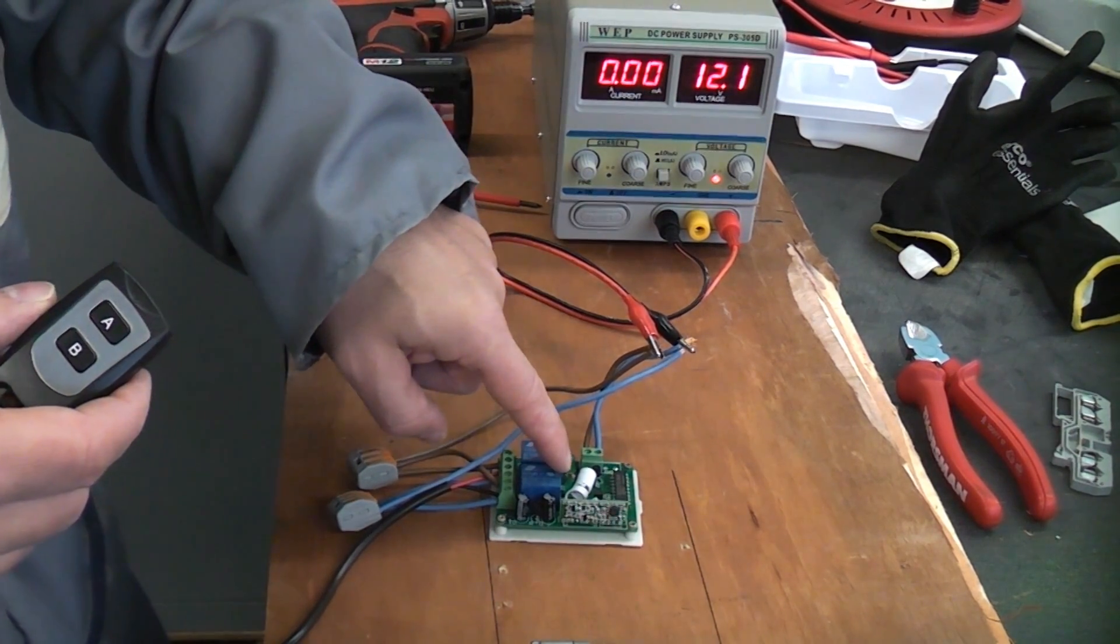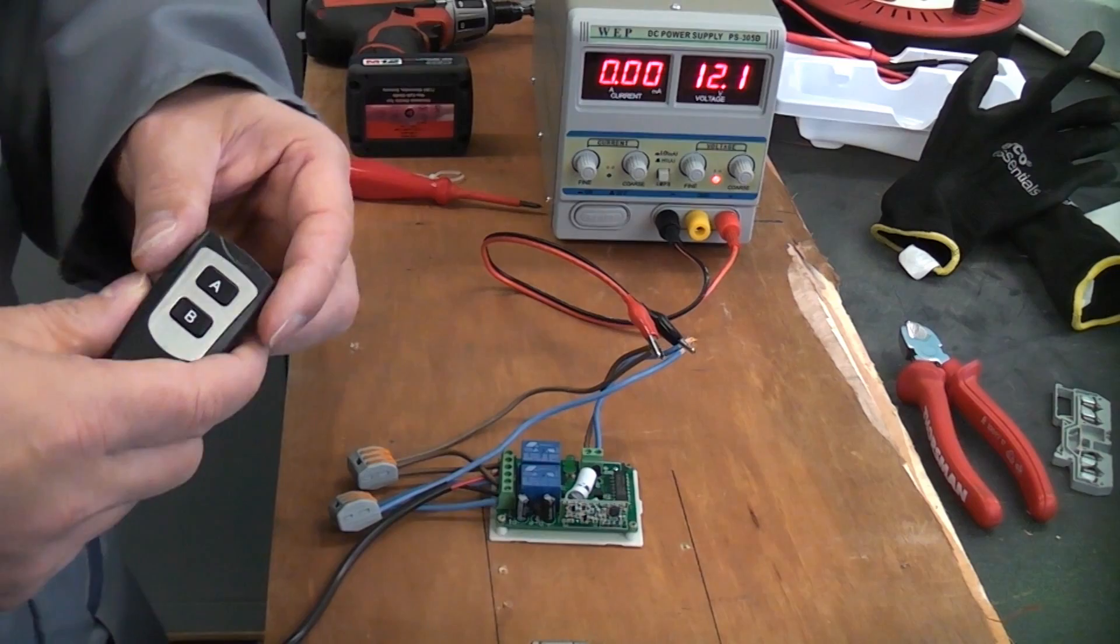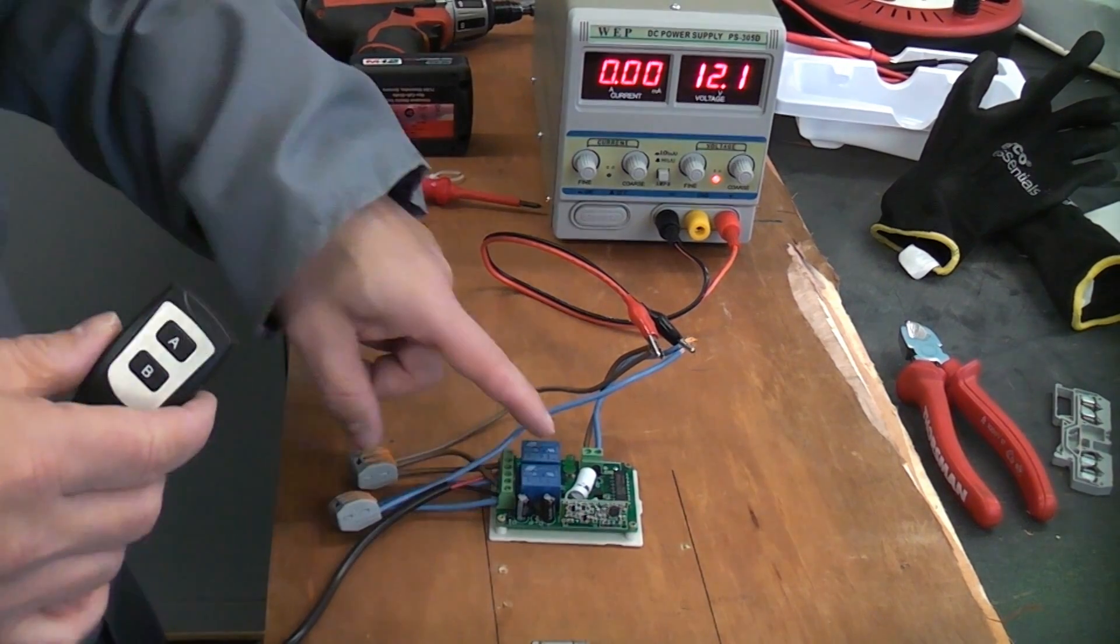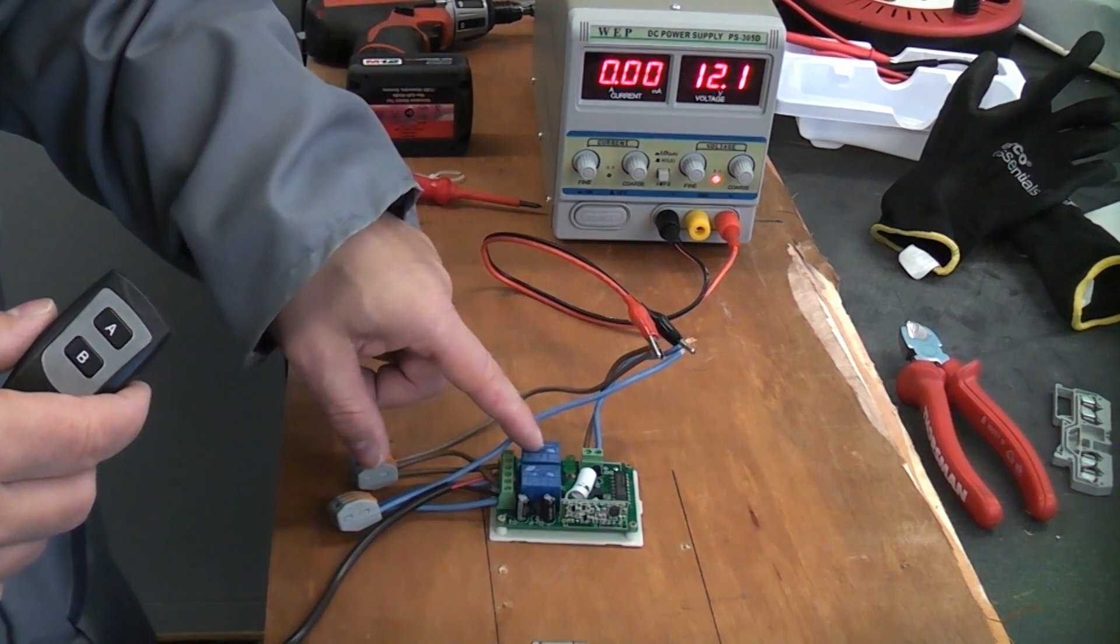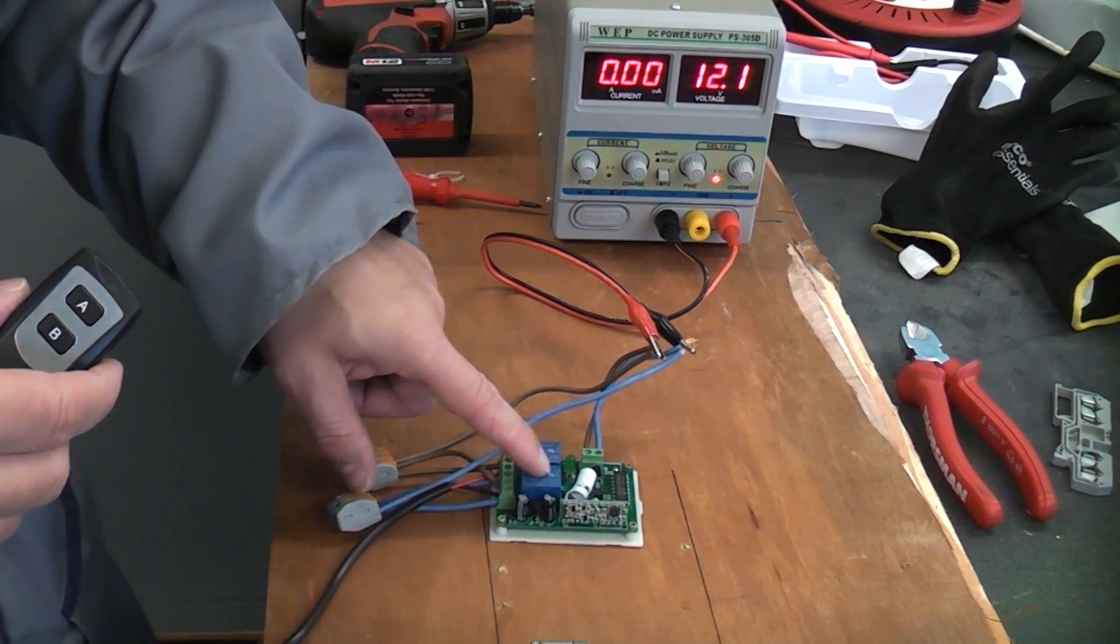Also you'll see on the board that there's two green LEDs. Depending on which button you press those LEDs will light up. That will also activate the corresponding relay.